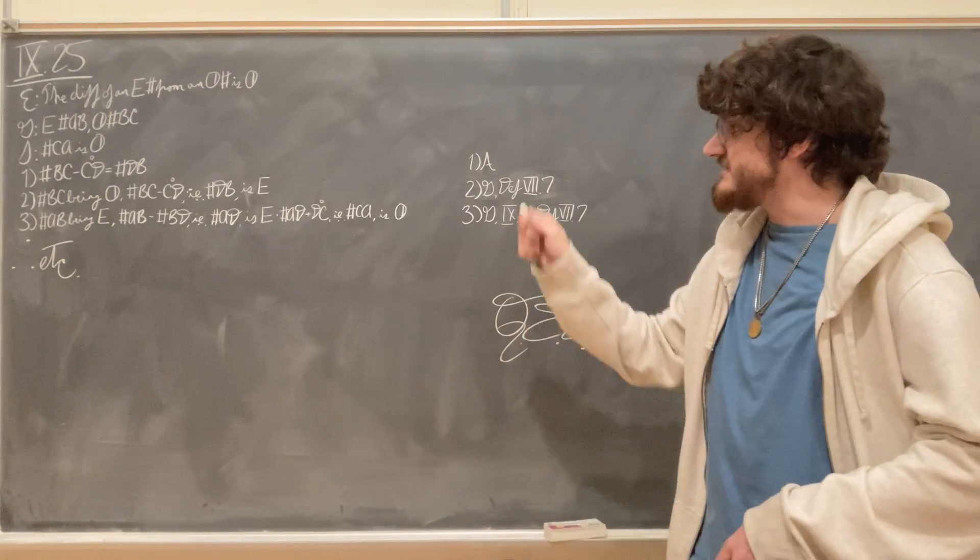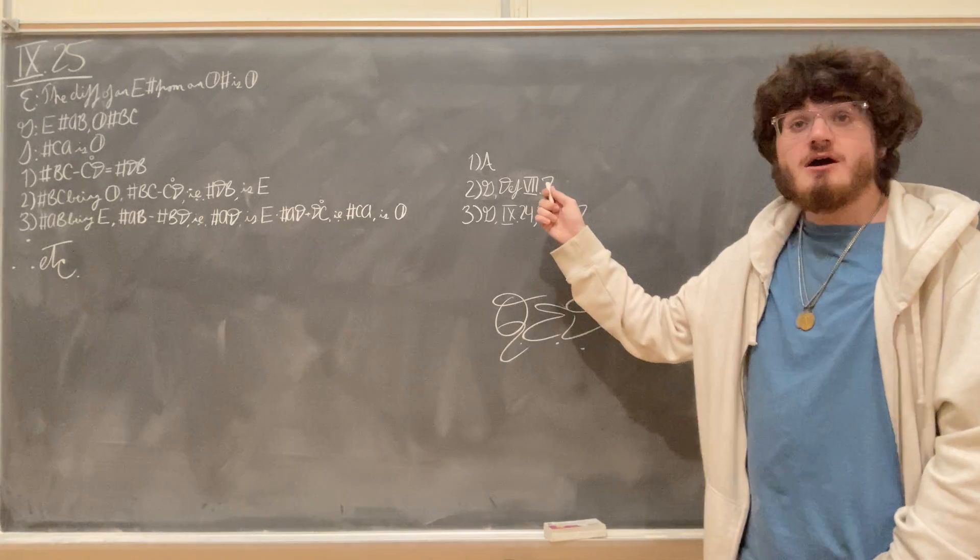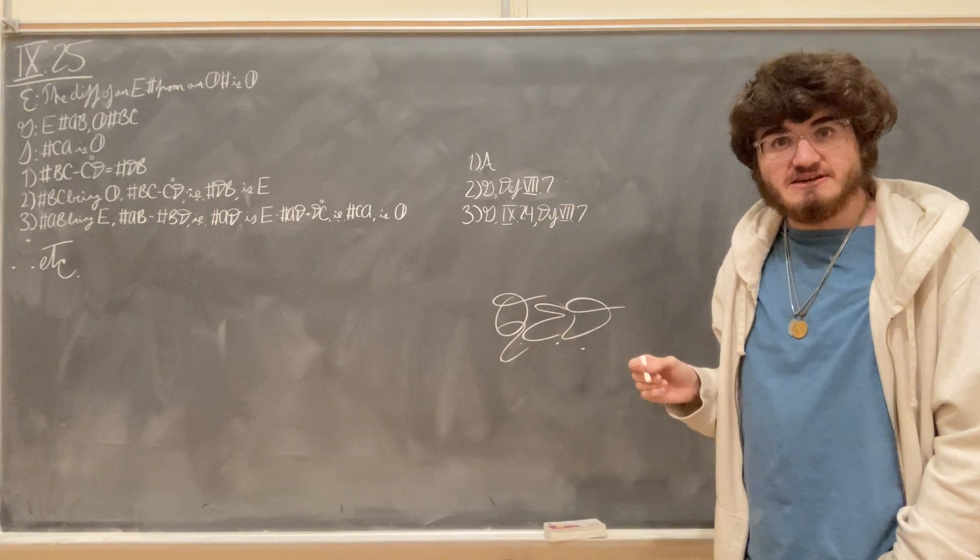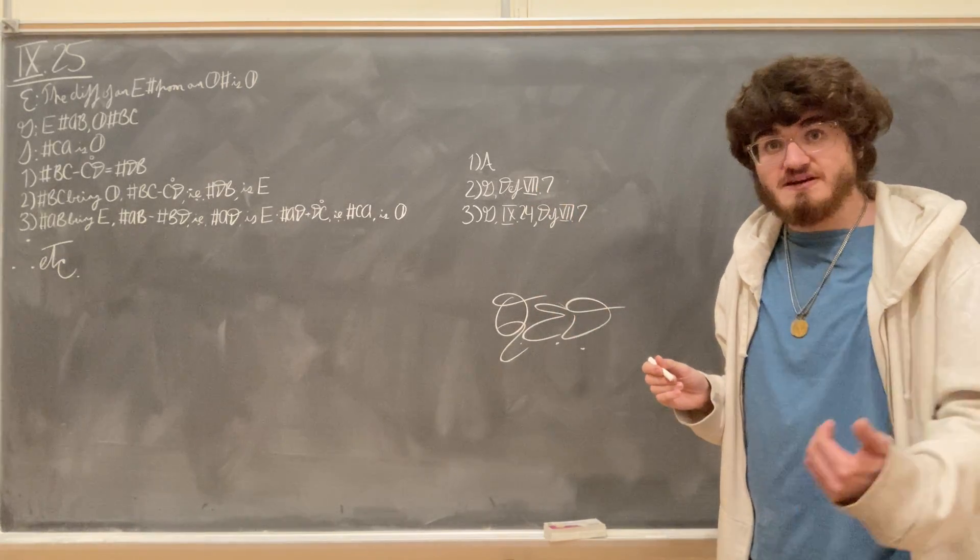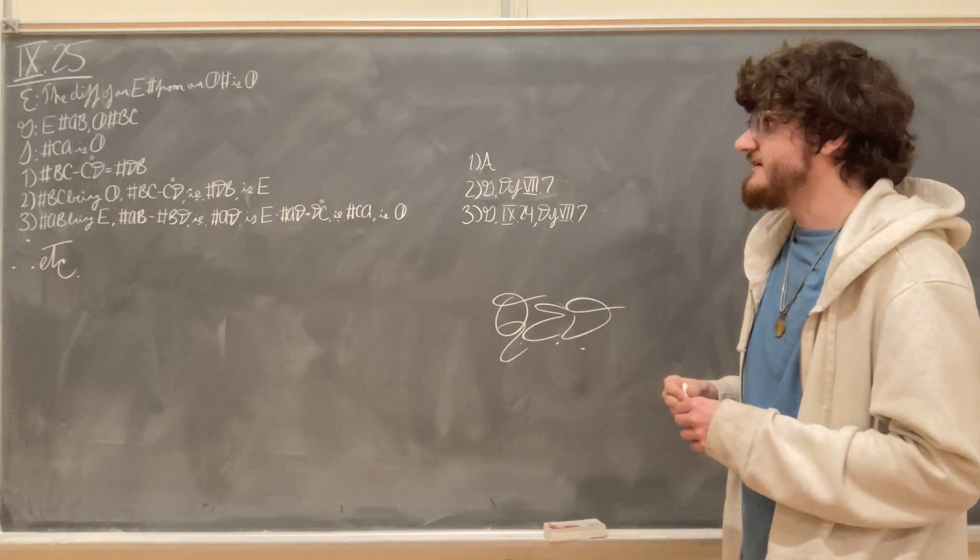their difference, which is the number A, D, will be even as well. That's what we get from proposition 924, that an even number minus an even number makes another even number.